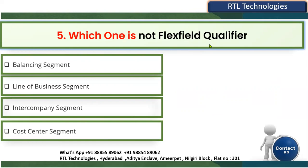Which one is NOT a flex field qualifier? While working with the chart of accounting structure, we define segments and choose them as flex field qualifiers. The options are: balancing segment, line of business segment, intercompany segment, and cost center segment. Balancing segment is a flex field qualifier — it defines at the company level. Intercompany segment is used for intercompany setups and transactions. Cost center segment is used when organizations manage cost accounting. The only option that is NOT a flex field qualifier is line of business segment — we do not have any flex field qualifier called line of business segment.